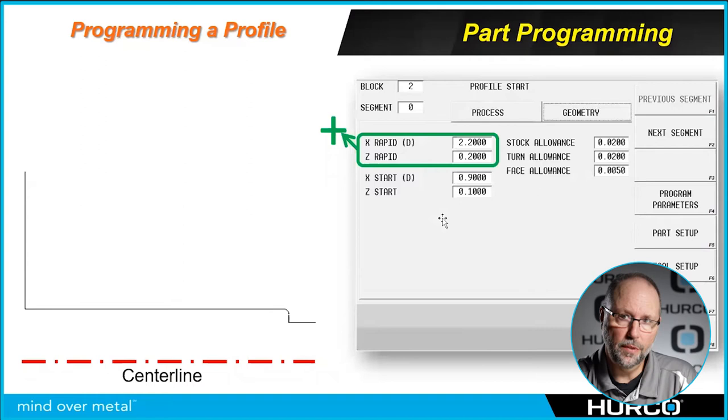The first thing we need to do when we go to the geometry tab is put in a rapid position that is bigger than the material or above the material and in front of the part. As I mentioned in the previous video, I usually add two hundred thousandths. This is a two inch diameter part, so I went to 2.2 in diameter and 0.2 in front of Z.